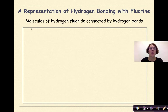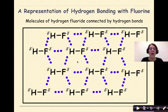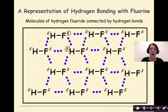Let's look at a representation of hydrogen bonding with fluorine — specifically, molecules of hydrogen fluoride connected by hydrogen bonds. Here we have our molecules of hydrogen fluoride. The hydrogen is slightly positive while the fluorine is slightly negative. When we add in our hydrogen bonds, we can see that the slightly negative fluorine is attracted to the slightly positive end of the hydrogen, and we see this repeating pattern all through this representation.